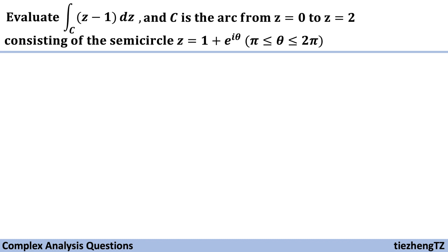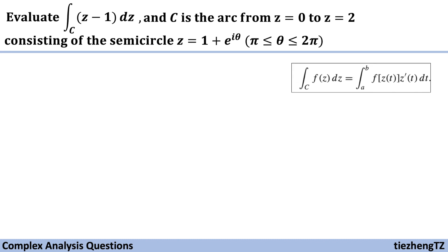This question is to evaluate the integral on contour C of (z minus 1) dz, where the contour C is the arc from z equals 0 to z equals 2, consisting of the semicircle z equals 1 plus e to the power of i theta, where theta is from pi to 2 pi. When we see this function, we know we are going to use the contour integral formula to solve.